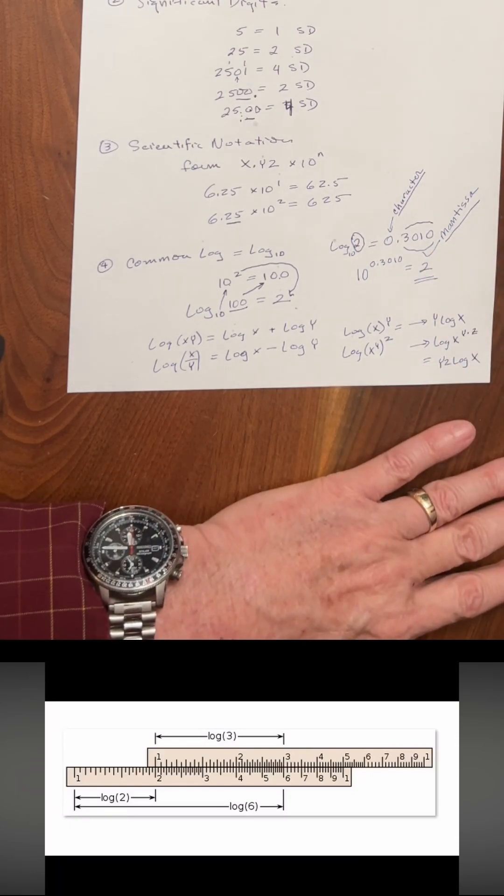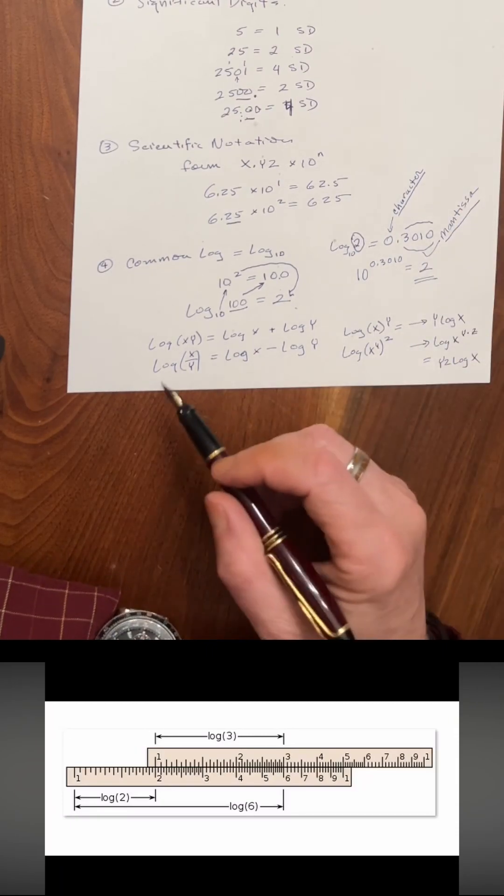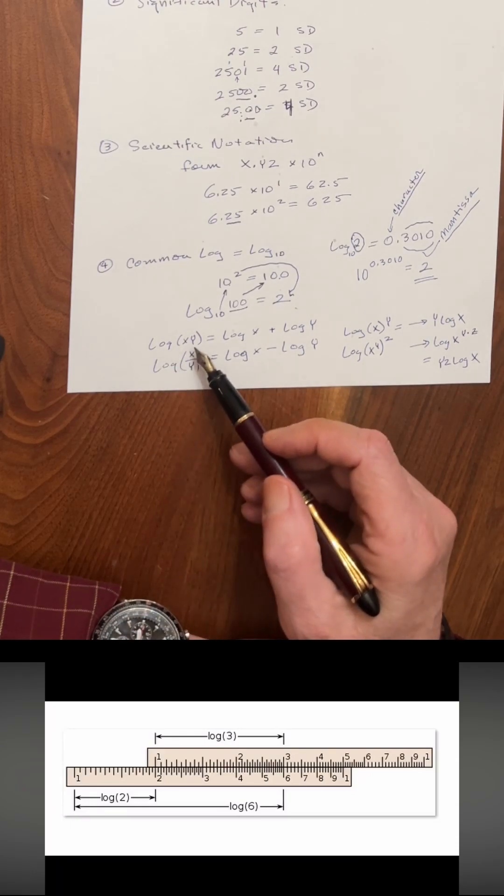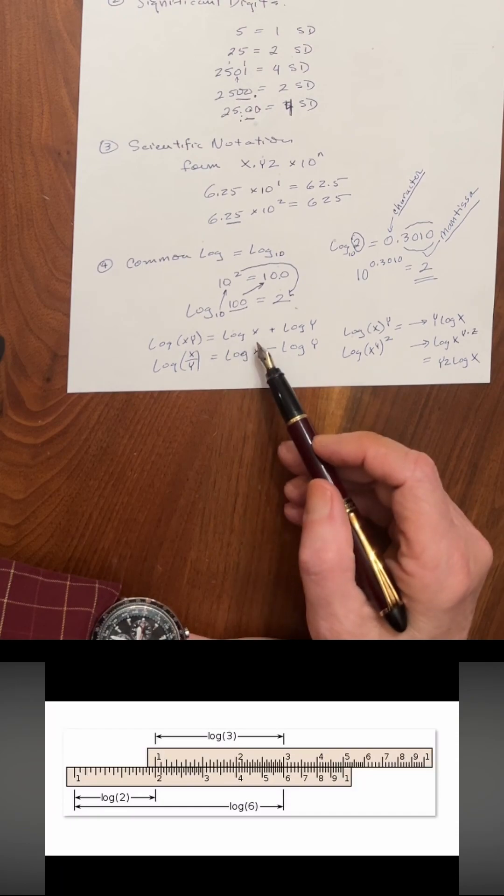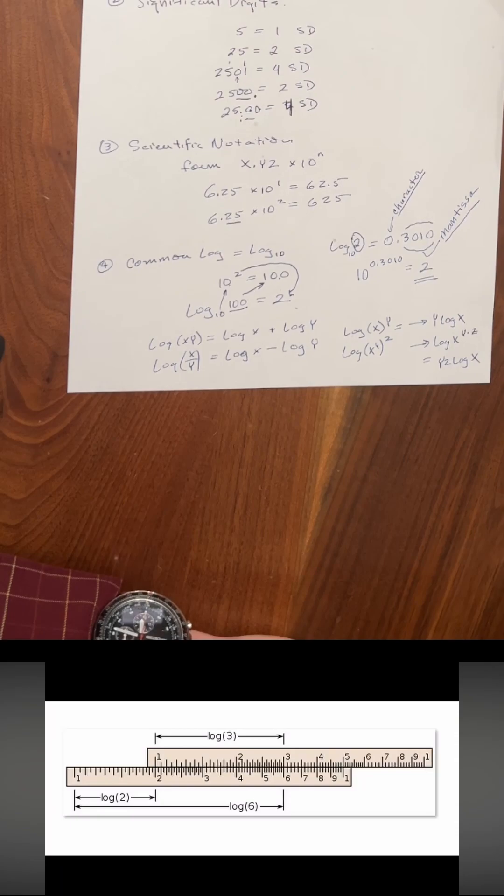The final thing that we have to understand about logarithms is that they convert multiplication and division into addition and subtraction. So if we're multiplying two numbers, x and y, if we take the log of xy, that equals the log of x plus the log of y. You can see from the slide rule image at the bottom of the page, what we're doing is we're taking the log of 2, and we're adding to it the log of 3 to come up with the log of 6.